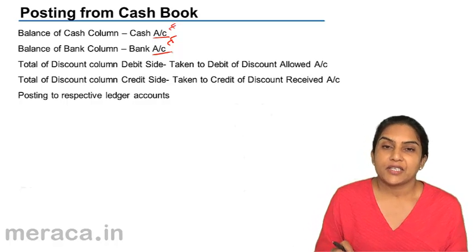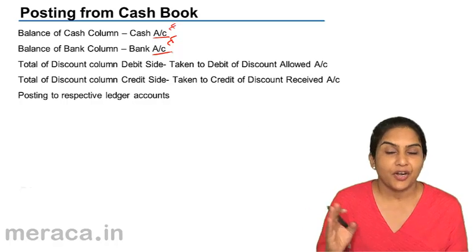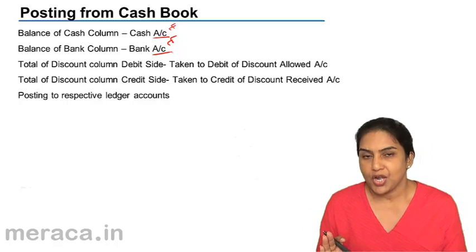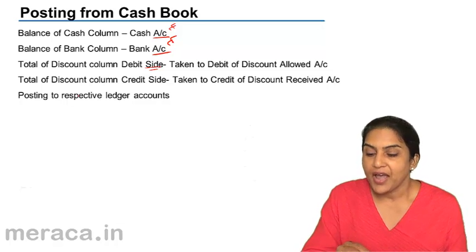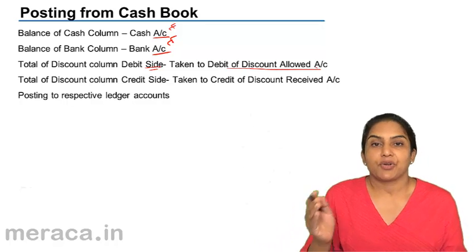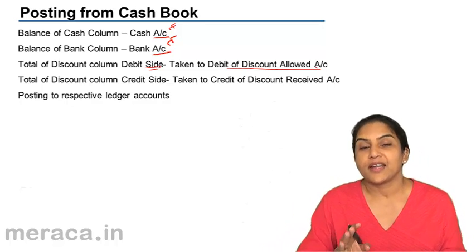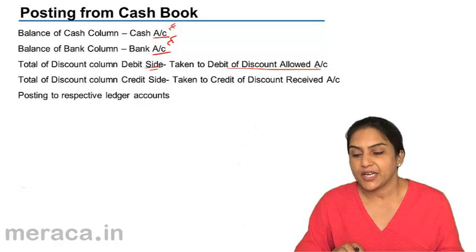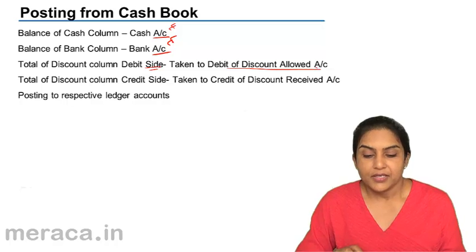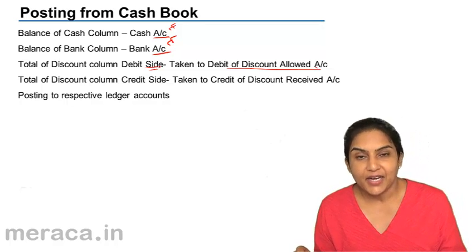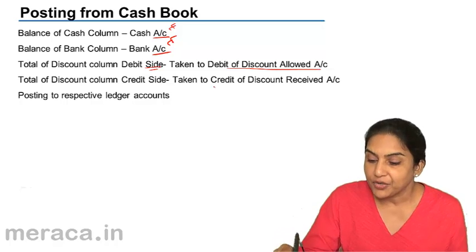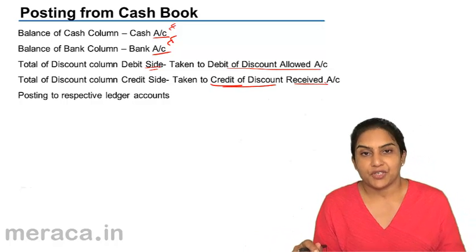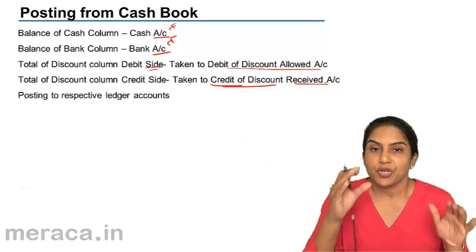We also have discount allowed and discount received columns, but these are not directly representative of the discount account. The total of the discount column on the debit side represents discount allowed, and therefore it is taken to the debit of the discount allowed account — 'To Sundries as per cash book.' The total of the discount column on the credit side represents discount received, and it is taken to the credit side of the discount received account — 'By Sundries as per cash book.'